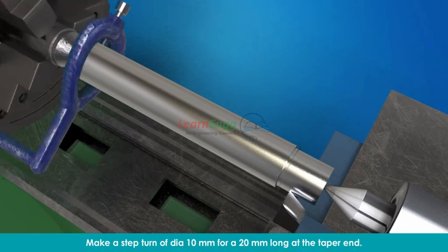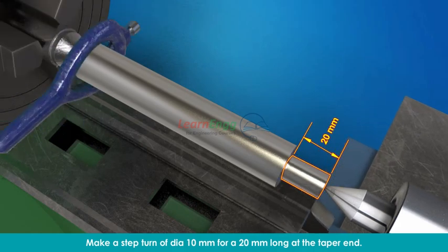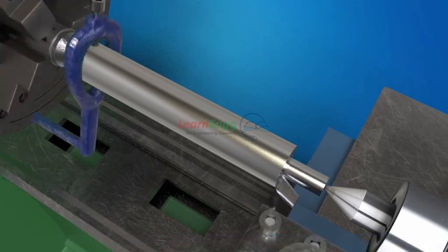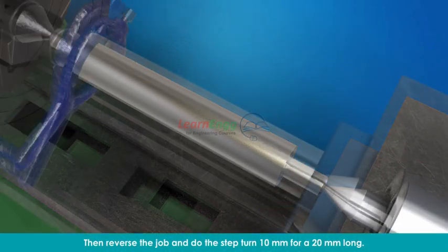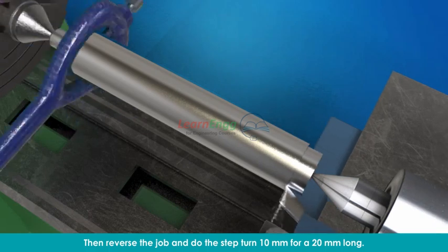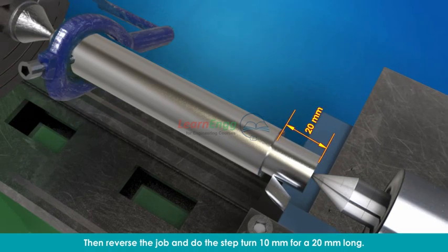Make a step turn of diameter 10mm for 20mm long at the taper end. And make chamfer at the end. Then reverse the job and do the step turn 10mm for 20mm long.